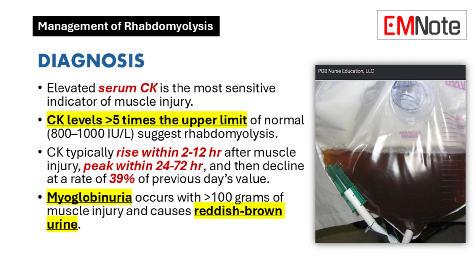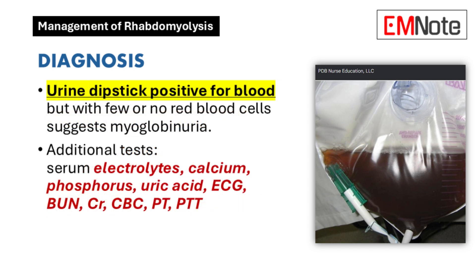Myoglobinuria occurs when more than 100 grams of skeletal muscle is injured. Myoglobin levels rise before CK levels but are rapidly cleared from the plasma. Myoglobinuria can cause reddish-brown urine when levels exceed 100 mg per deciliter. A urine dipstick that tests positive for blood but with few or no red blood cells on microscopy suggests myoglobinuria. However, the absence of elevated myoglobin levels does not rule out rhabdomyolysis. Additional laboratory tests should include serum electrolytes, calcium, phosphorus, and uric acid levels to identify complications such as hyperkalemia, abnormal calcium and phosphorus levels, and hyperuricemia.